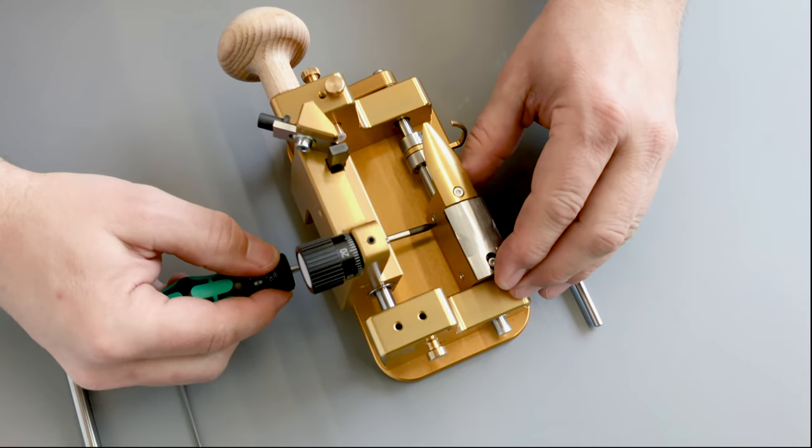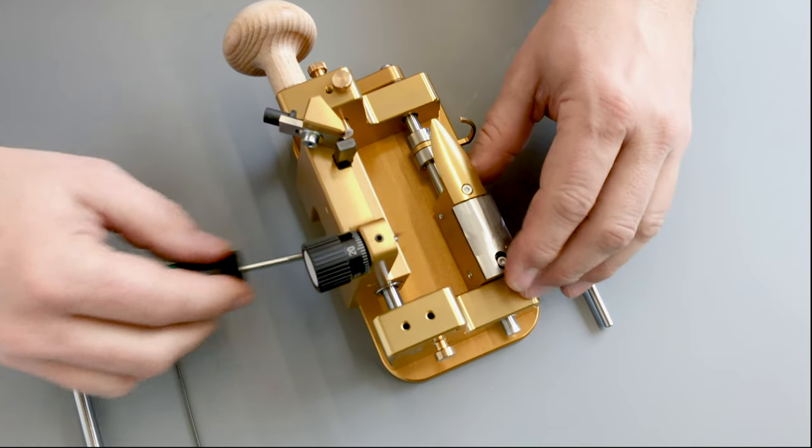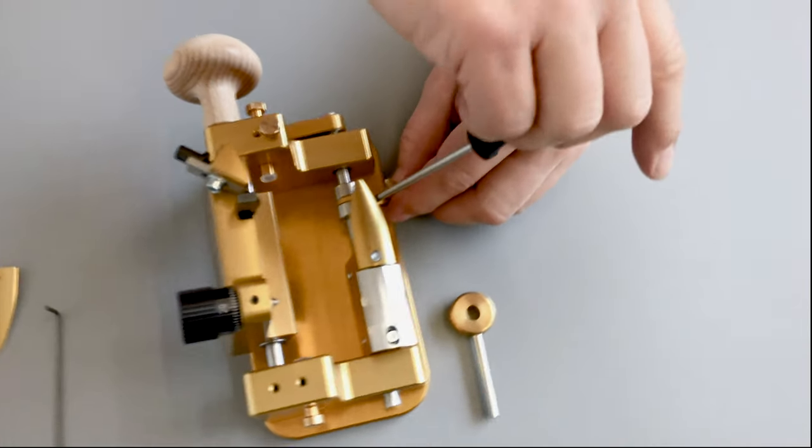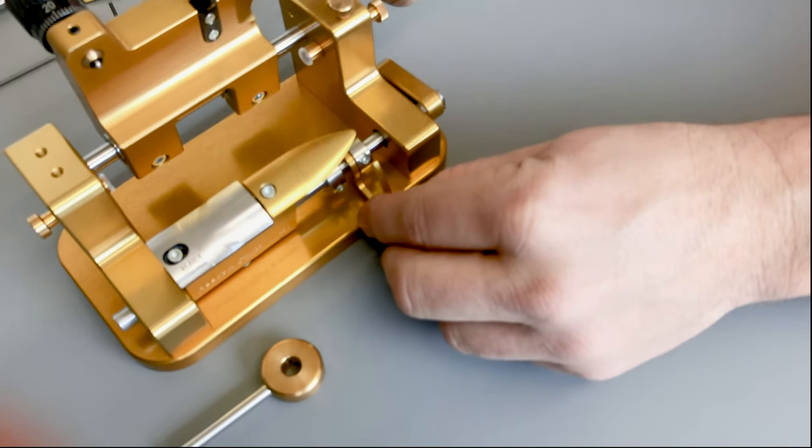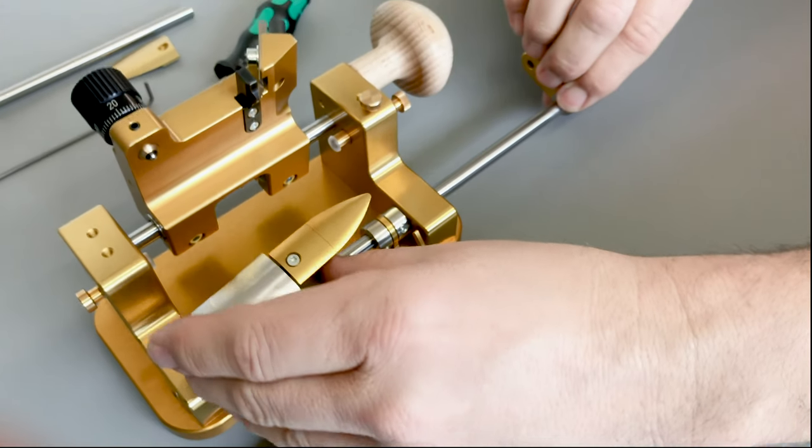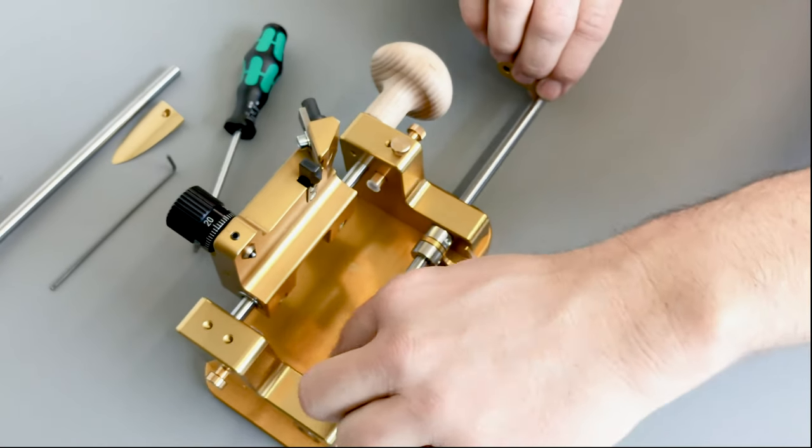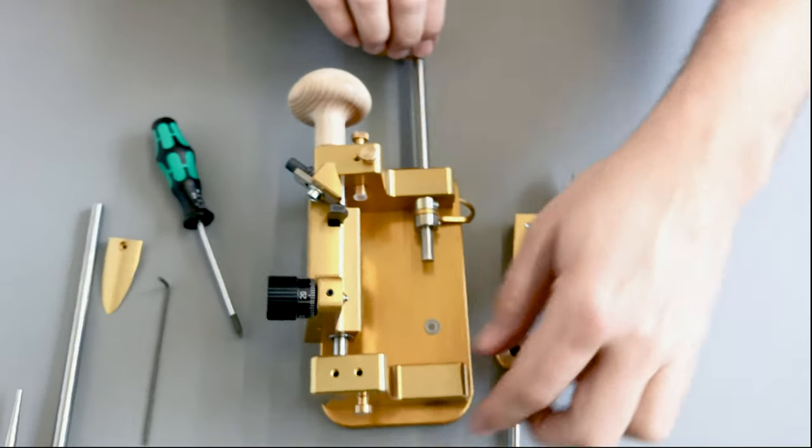With a Torx key I open these two screws plus the other ones here and now I can pull out all the parts. Don't forget the little shims.